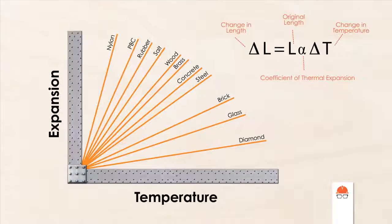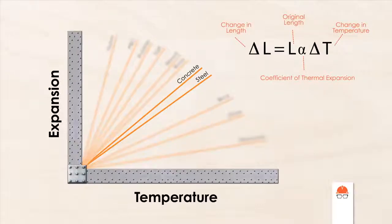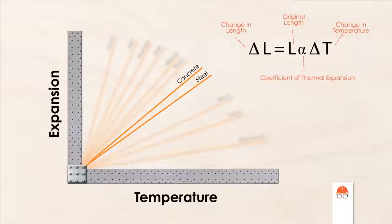Lucky for civil engineers, the thermal expansion coefficients for steel and concrete are nearly identical, which is why we can combine them into the ubiquitous construction material, reinforced concrete, without worrying too much about fluctuations in temperature pulling it apart. But even though they expand and contract at the same rate, they still expand and contract.